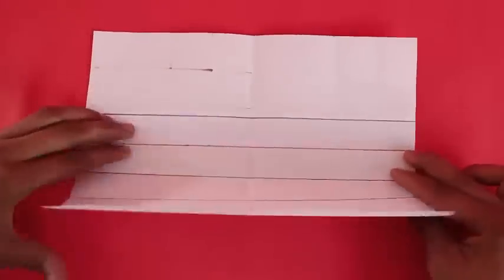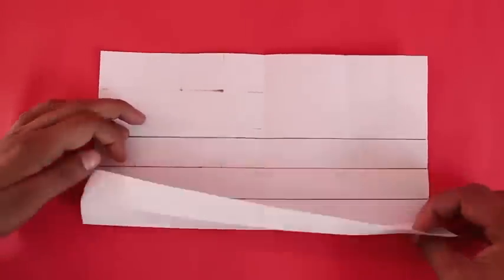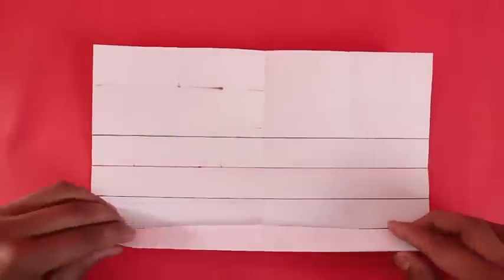Now we will see how to make it in slow motion. First, fold the paper into half, open this, then fold the quarter line, open this, and then the one-eighth line.